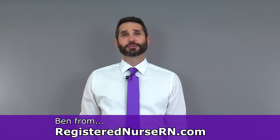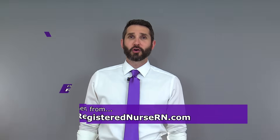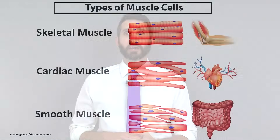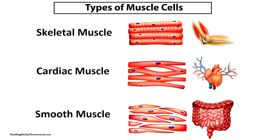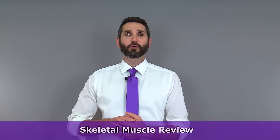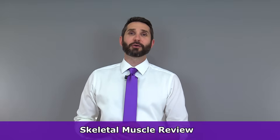Hey everyone, this is Ben with RegisterNurseRN.com. Did you know that there are three types of muscle tissue found in the human body? We have skeletal muscle, cardiac muscle, and smooth muscle tissue. In this video, I'm going to give you a quick review of skeletal muscle tissue.